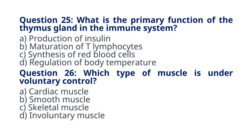Question 26. Which type of muscle is under voluntary control? A. Cardiac muscle. B. Smooth muscle. C. Skeletal muscle. D. Involuntary muscle. The correct answer to question 26 is option C. Skeletal muscle. Explanation: Skeletal muscles are attached to bones and are under voluntary control, allowing conscious movement.